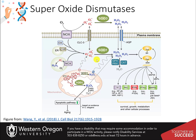The SOD enzymes convert superoxide to hydrogen peroxide and a molecule of oxygen. SOD1 is a cytosolic form of this enzyme, whereas SOD2 is mitochondrial, and SOD3 is extracellular. The peroxide produced in this process is also reactive and can cause damage to proteins, especially at cysteine residues. Other enzymes, such as catalase, peroxiredoxins, and glutathione peroxidase, can break down peroxide into water.